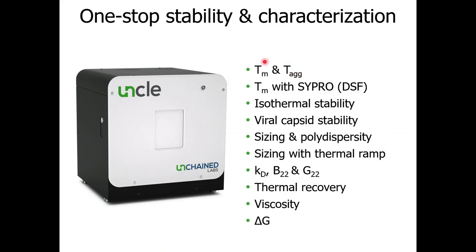One very popular application that we will also use today is the TM-TAG app, looking at the melting and aggregation temperatures of protein. If you want to run a DSF or thermal shift experiment, UNCLE has you covered. We can do TM determinations using reporter dyes, like SYPRO Orange. UNCLE can also be used for isothermal experiments and, of course, for viral capsid stability work. We can also look at DLS to find out about the size of our analyte and the polydispersity, or combine DLS with a thermal ramp and look at sizing in a thermal ramp. You can use UNCLE to determine colloidal stability parameters like the diffusion interaction parameter, second virial coefficient, or Kirkwood-Buff integral, as well as for thermal recovery tests, viscosity measurements, and isothermal chemical denaturation.